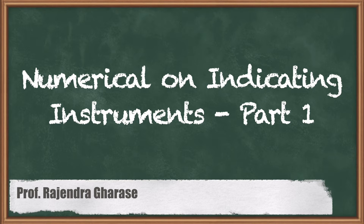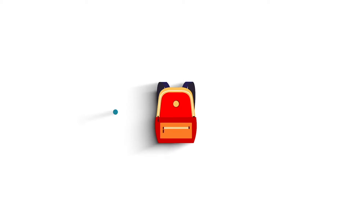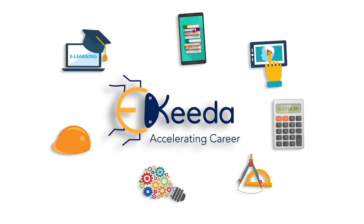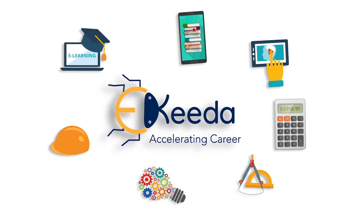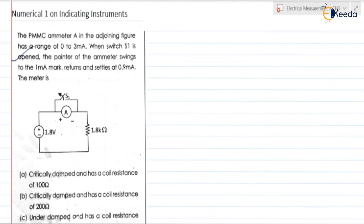Hello friends. In this video we are going to discuss the numericals related to indicating instruments. Let us read the question. The PMMC ammeter A, as shown in the adjoining figure, has a range of 0 to 3 milliampere. When switch S1 is opened, the pointer of the ammeter swings to the 1 milliampere mark, returns and settles at 0.9 milliampere. The meter is — and they have given 4 options.